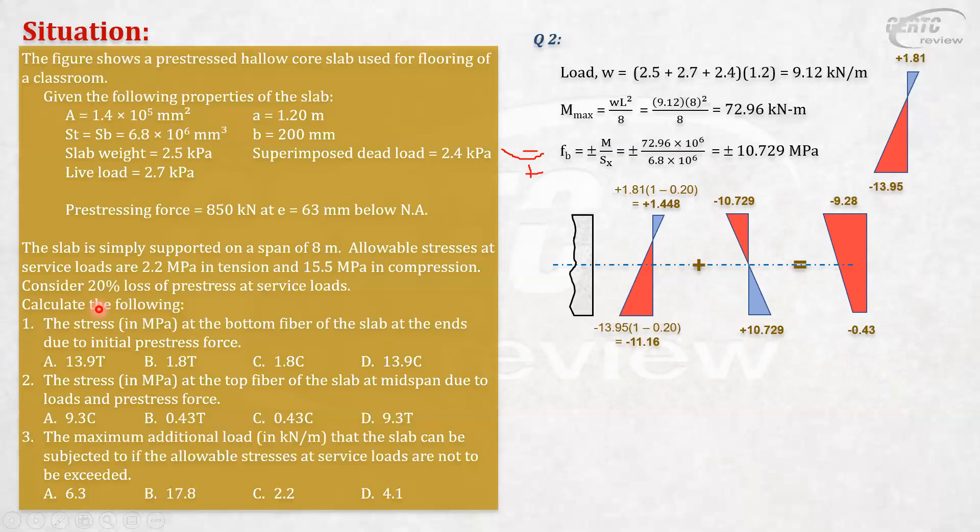Now let's have Part 3, question number 3. What is the maximum additional load, in addition to these loads, kilonewton per meter, that the slab can be subjected to without exceeding the allowable stresses? The allowable stresses are 2.2 in tension and 15.5 in compression. Listen carefully, this is a very critical question. Many are confused here.